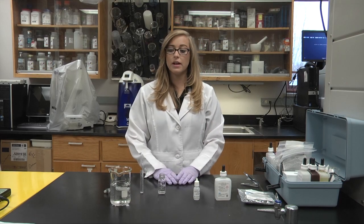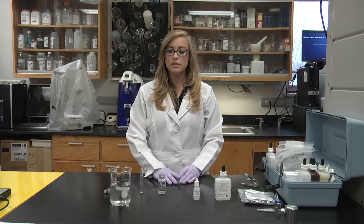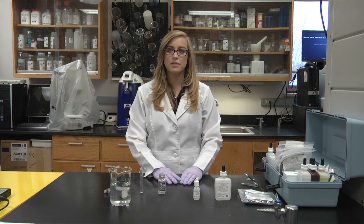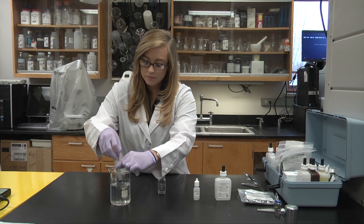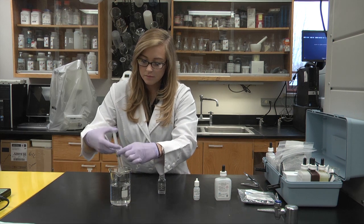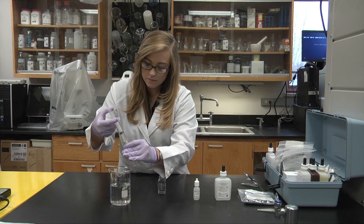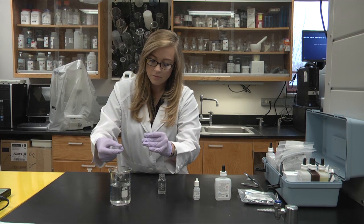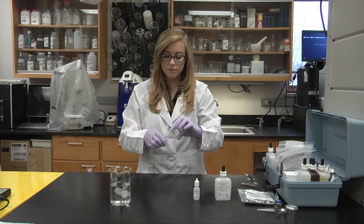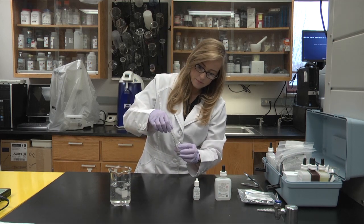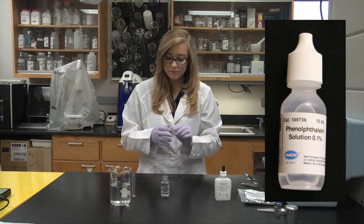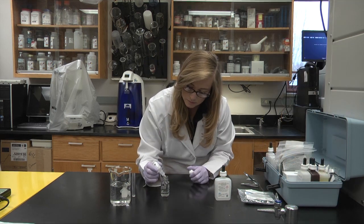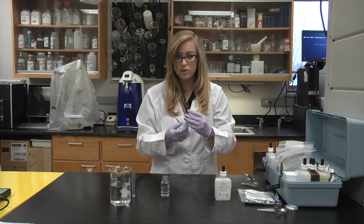Now we're going to test for alkalinity. Alkalinity is the total concentration of bases, and this refers to the capability of water to neutralize acid or its buffering capacity. So first you're going to get your plastic tube and fill it up, and then pour it into your glass mixing bottle. Then you add one drop of the phenolphthalein solution.